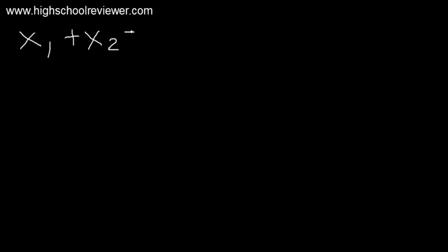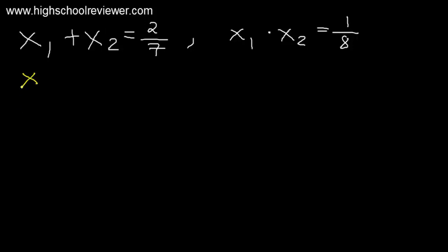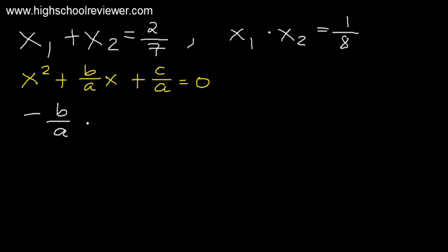Find the quadratic equation using x sub 1 plus x sub 2 and x sub 1 times x sub 2. Our given: x sub 1 plus x sub 2 equals 2 over 7, and x sub 1 times x sub 2 equals 1 over 8. One form of a quadratic equation is x squared plus b over a times x plus c over a equals 0. We know that negative b over a equals x sub 1 plus x sub 2, and c over a equals x sub 1 times x sub 2.